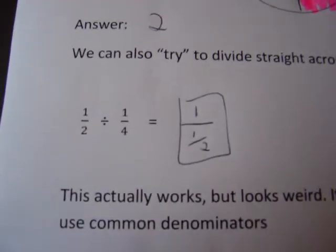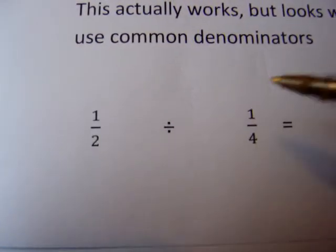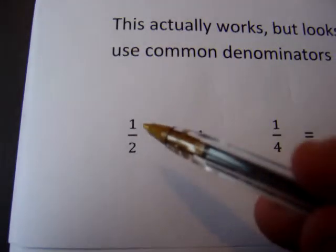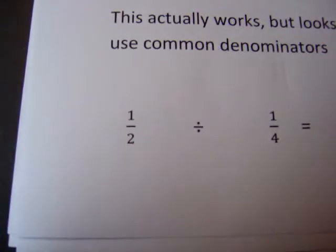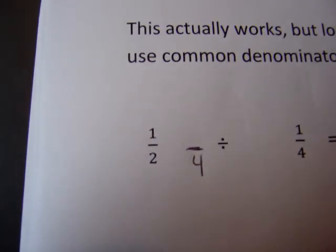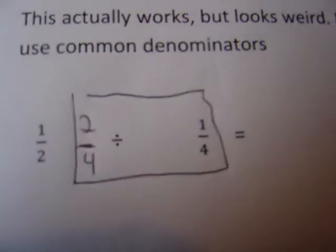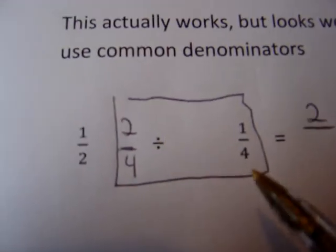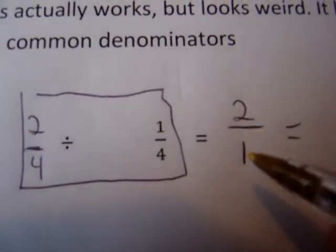This actually works but it looks weird. It looks much better if we use common denominators. Let's try this division problem again using common denominators: 1/2 divided by 1/4. The common denominator is fourths. How do you change 1/2 into something involving fourths? 2 times 2 gives us 4, so we do it to the top: 1 times 2 is 2. 1/2 is the same as 2/4. Now if we focus on this, 2 divided by 1...